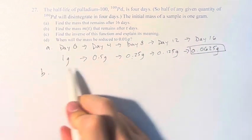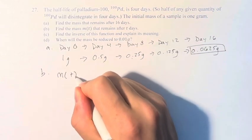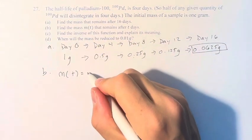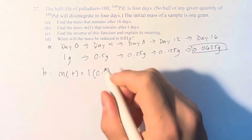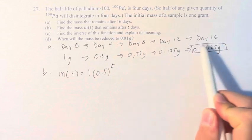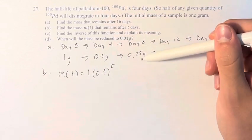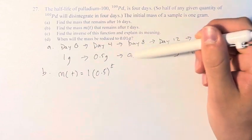We're going to use the relationship that we just found here to find the mass m(t) that remains after t days. So we start with 1 gram. We multiply it by 1/2, t times, where t is the number of repetitions of multiplying by 0.5. So if t is 2, then we're multiplying it by 0.5 twice to get 0.25.